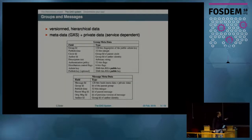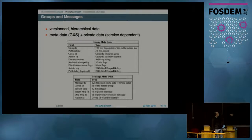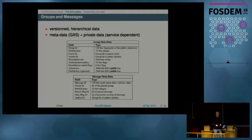Groups and messages each have two parts: metadata and private data. The metadata is what GXS uses for synchronization — for instance, the group metadata contains the cycle ID, which limits visibility. The private data is what the service uses for its specific application.